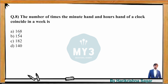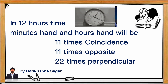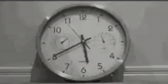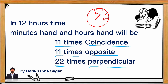Important theory: in every 12 hours, the minute and hour hands coincide 11 times and are opposite 11 times, but are perpendicular 22 times. This is because coincidence happens once per hour except between 12 and 1, giving 11 times. Every hour has 2 perpendicular positions, but two are missed (at 3 and 9 o'clock ranges), giving 22 instead of 24.